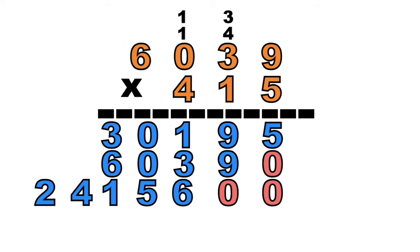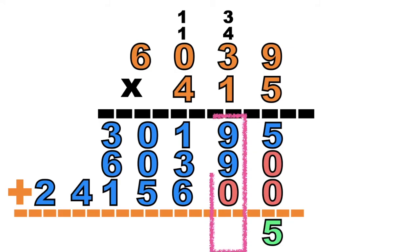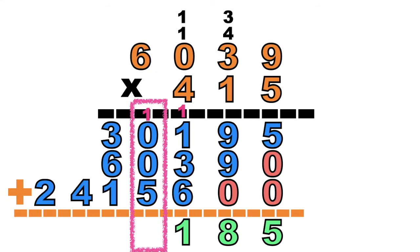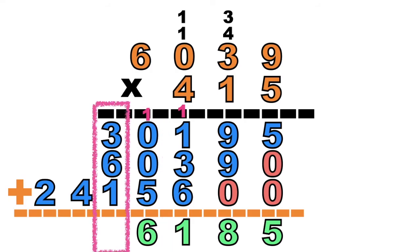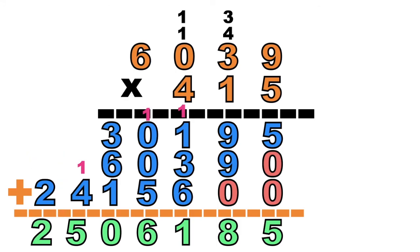So we can now add the partial products. 5 plus 0 plus 0 equals 5. How about 9 plus 9 plus 0 equals — it's 18. So we're going to write 8 at the bottom, then carry 1. How about 1 plus 1 plus 3 plus 6 equals — it's 11. Write 1 at the bottom, then carry 1. How about 1 plus 0 plus 0 plus 5 equals — it's 6. 3 plus 6 plus 1 equals — it's 10. Write 0 at the bottom, then carry 1. 1 plus 4 equals 5. And lastly, bring down 2. So the product of 6,039 and 415 is 2,506,185.